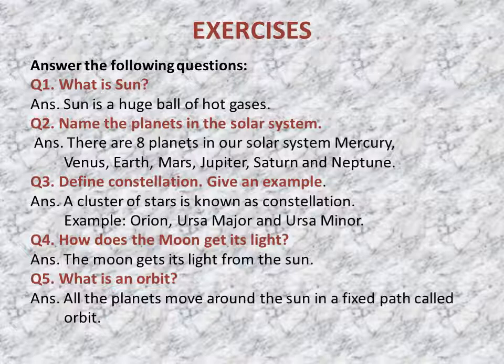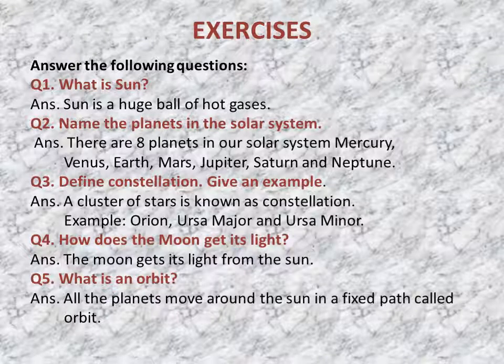Ursa Major and Ursa Minor are also examples of constellations. Question 4: How does the Moon get its light? The Moon gets its light from the Sun. Question 5: What is an orbit? All the planets move around the Sun in a fixed path called orbit.